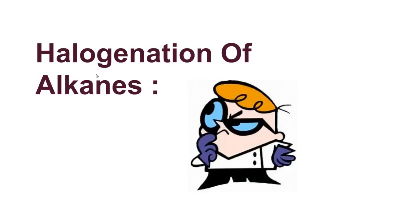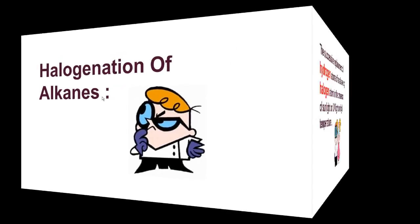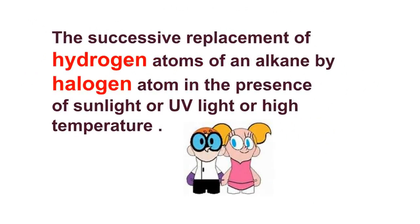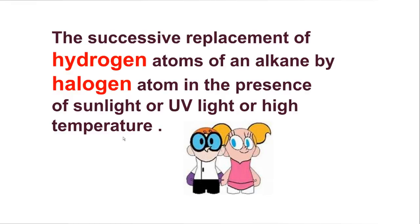Now let's see what it means by halogenation of alkanes. The successive replacement of hydrogen atoms of an alkane by a halogen atom in the presence of sunlight, ultraviolet light, or high temperature is known as halogenation of alkanes.